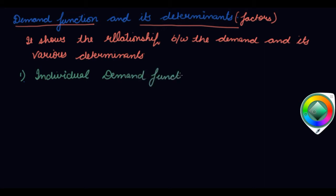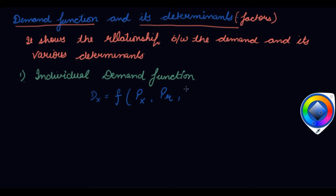In the individual demand function, demand is a function of: price of a commodity, price of related goods, income, taste and preferences, and expectations. We will understand each one of them in detail. The second is the market demand function.